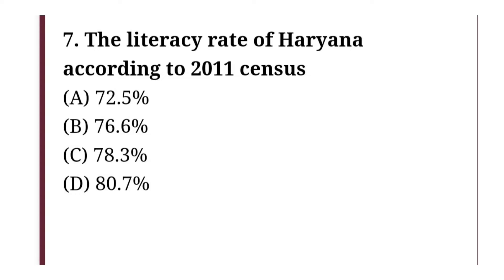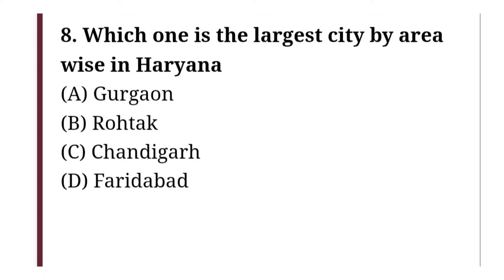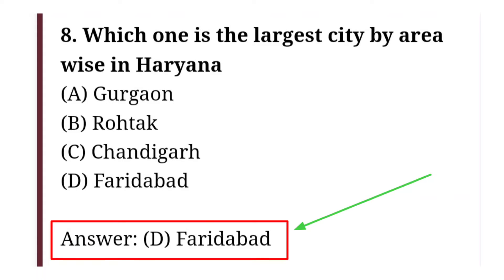The correct answer is option B, that is 1970. The literacy rate of Haryana according to the 2011 census — the correct answer is option B, that is 76.6 percent. Which one is the largest city by area in Haryana? The correct answer is option D, that is Faridabad.